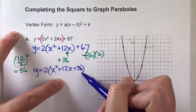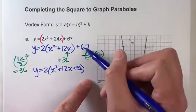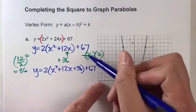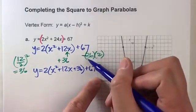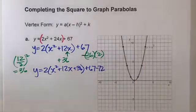Let me simplify this or rewrite it so you can see exactly what we did. This plus 36 is now inside the parentheses. And then on the outside, we've got the plus 67. And we're also subtracting 36 times 2, which is 72.